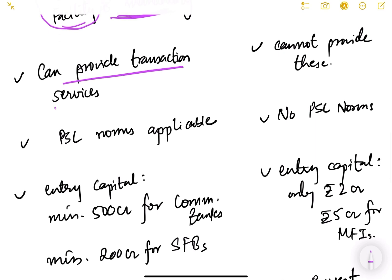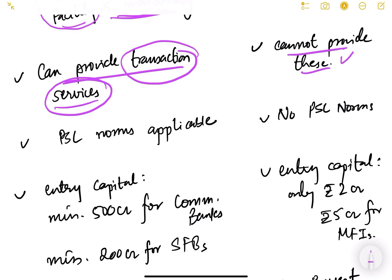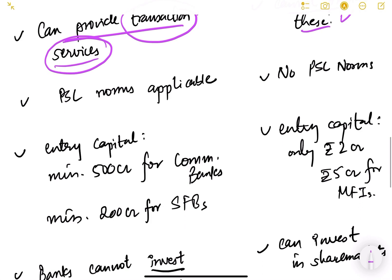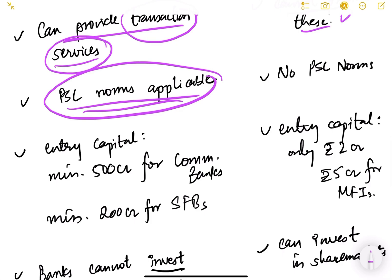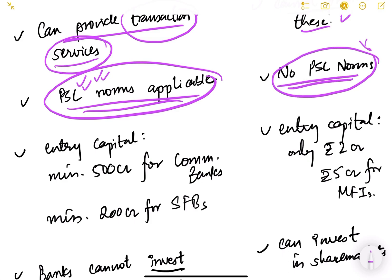Banks can provide transaction and payment services, whereas NBFCs cannot. Additionally, Priority Sector Lending (PSL) norms are applicable to different kinds of banks for various sectors and activities, as we have already studied in detail. For NBFCs, however, PSL norms are not applicable.